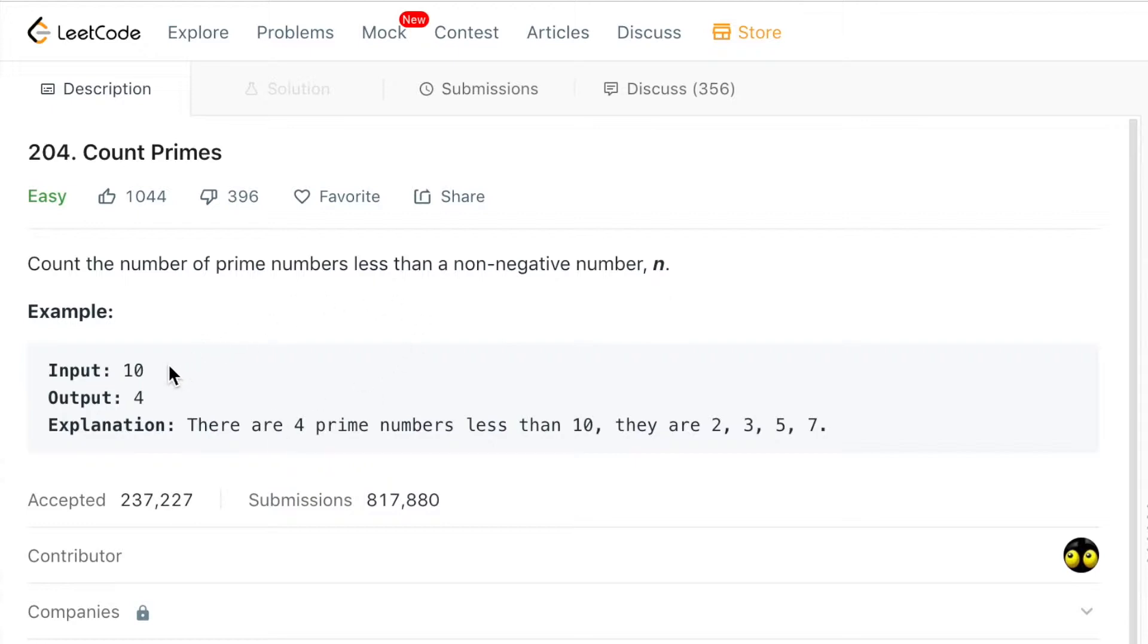For example, if you were inputted 10, your output should be 4 since there are 4 prime numbers less than 10: 2, 3, 5, and 7.